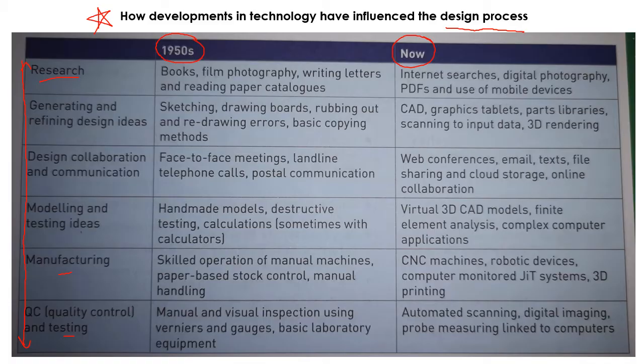The first thing we're going to talk about is how research would be done. Back in the 1950s, before we had the internet and even computers, you would be looking in books. You might be using photography, writing letters, thinking about surveys and getting feedback from your customers, and reading things like encyclopedias or catalogues.